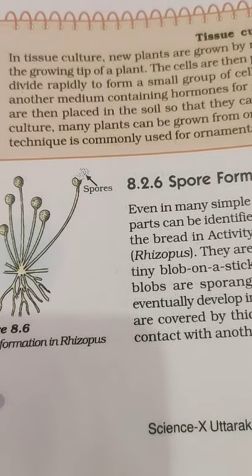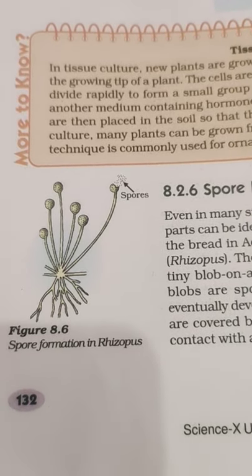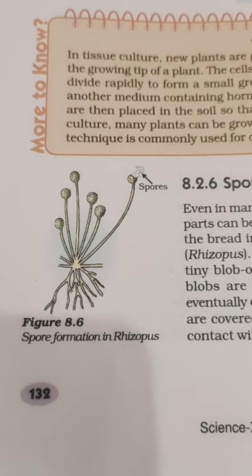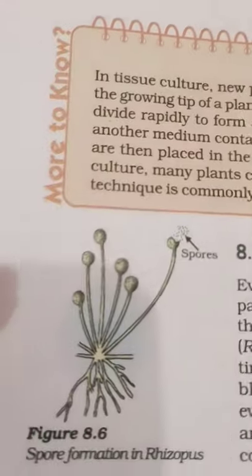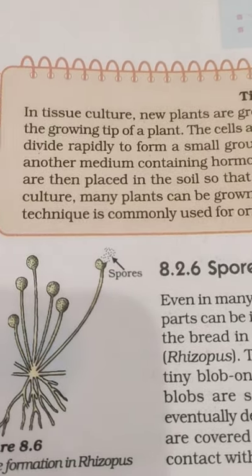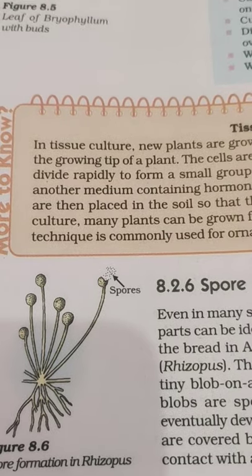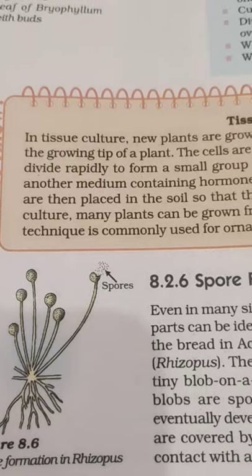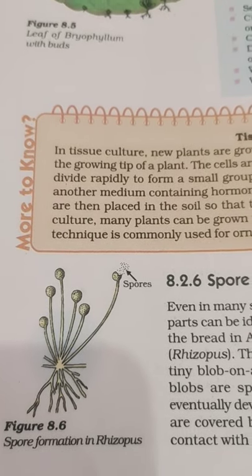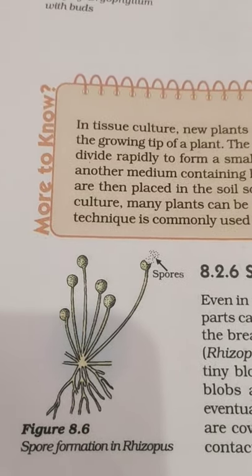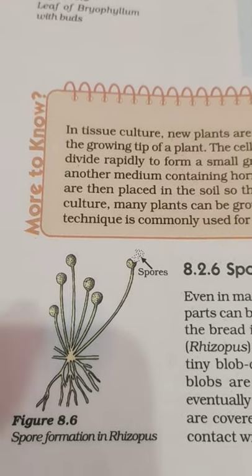Rhizopus is also called bread mold in common language. It is a fungus scientifically called rhizopus, and it reproduces by spore formation. The tiny spores of bread mold are always present in the air. If we keep a moist slice of bread for a few days, those spores already present in the air settle on the moist bread and germinate to form a new fungus plant.